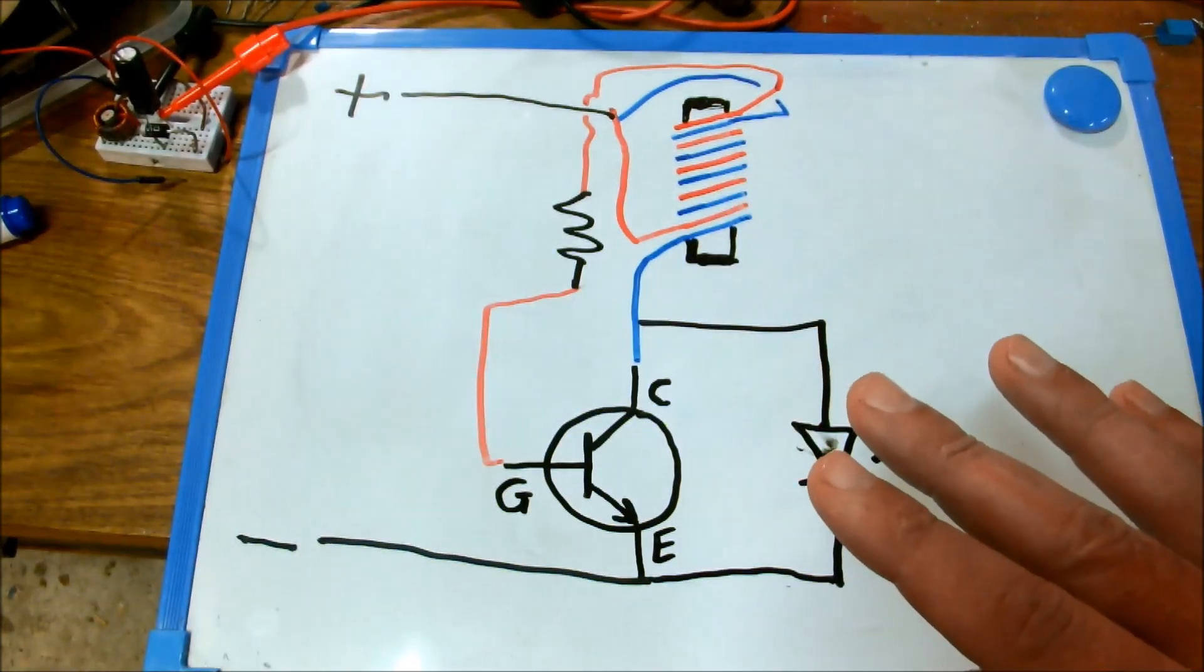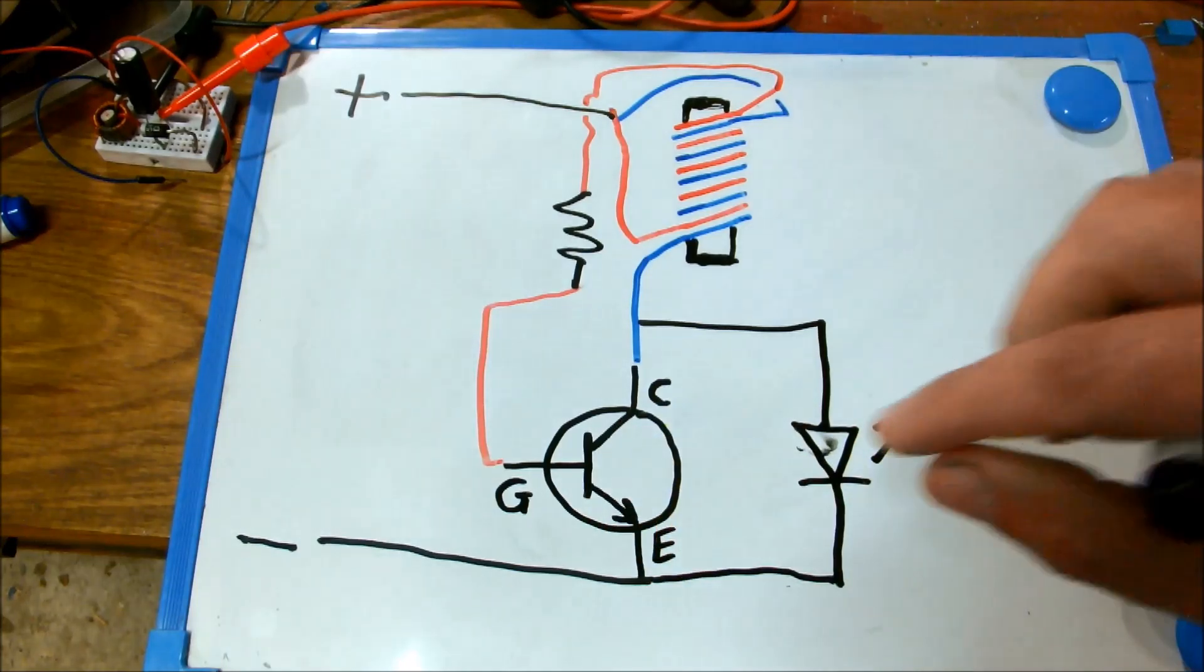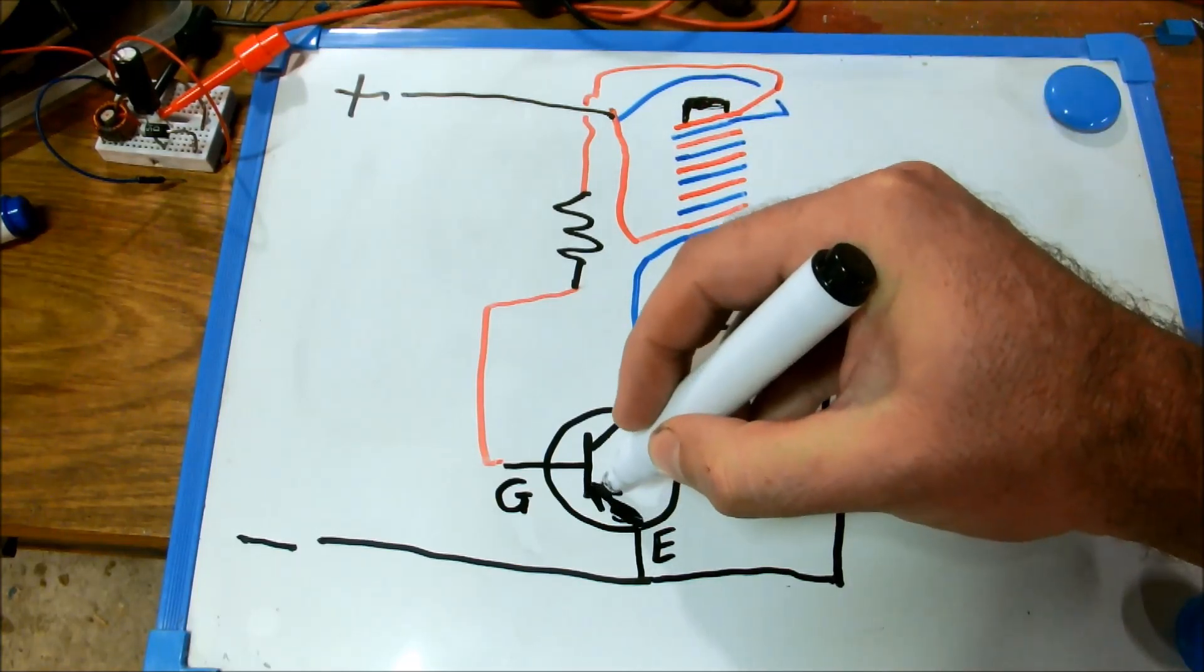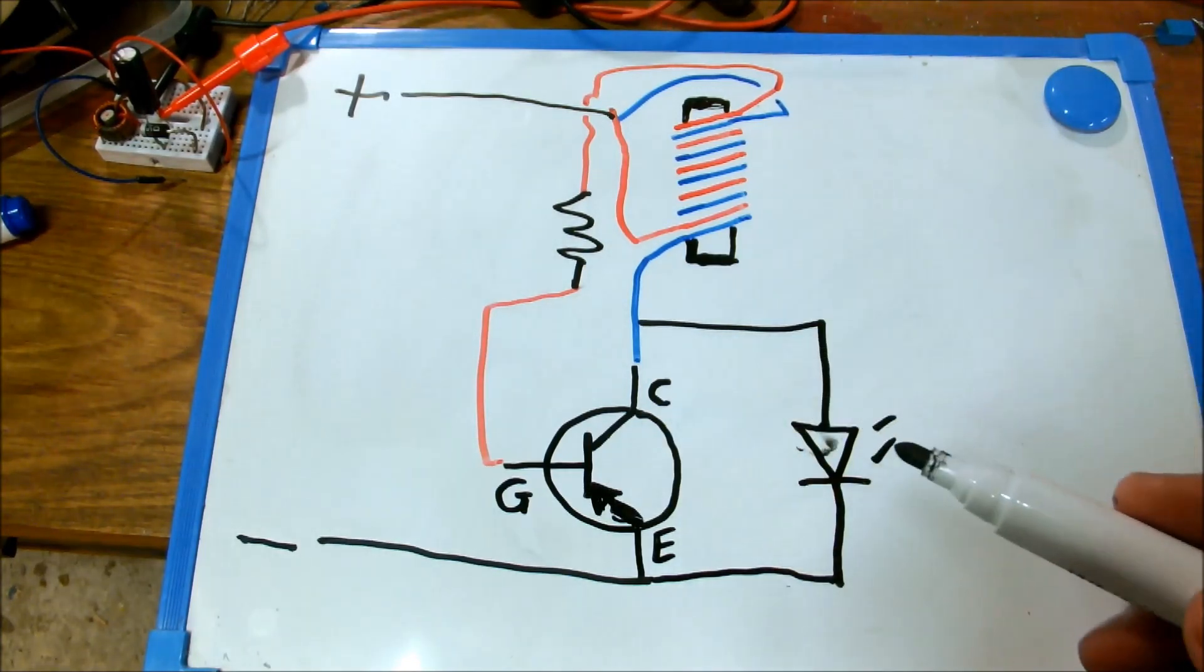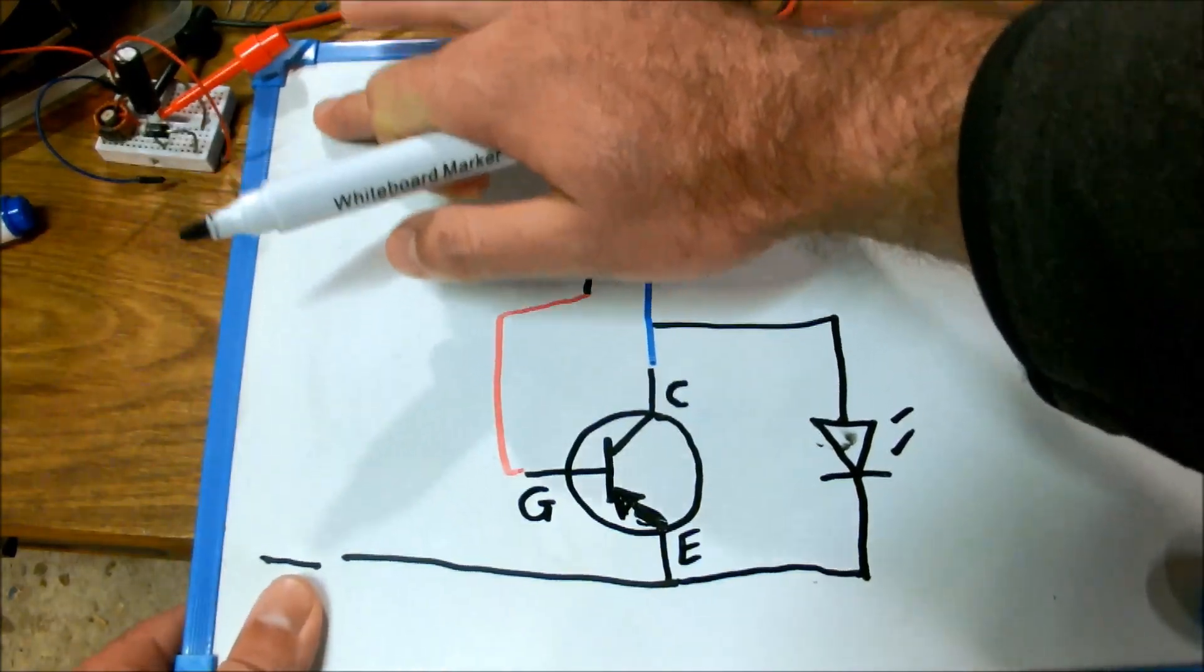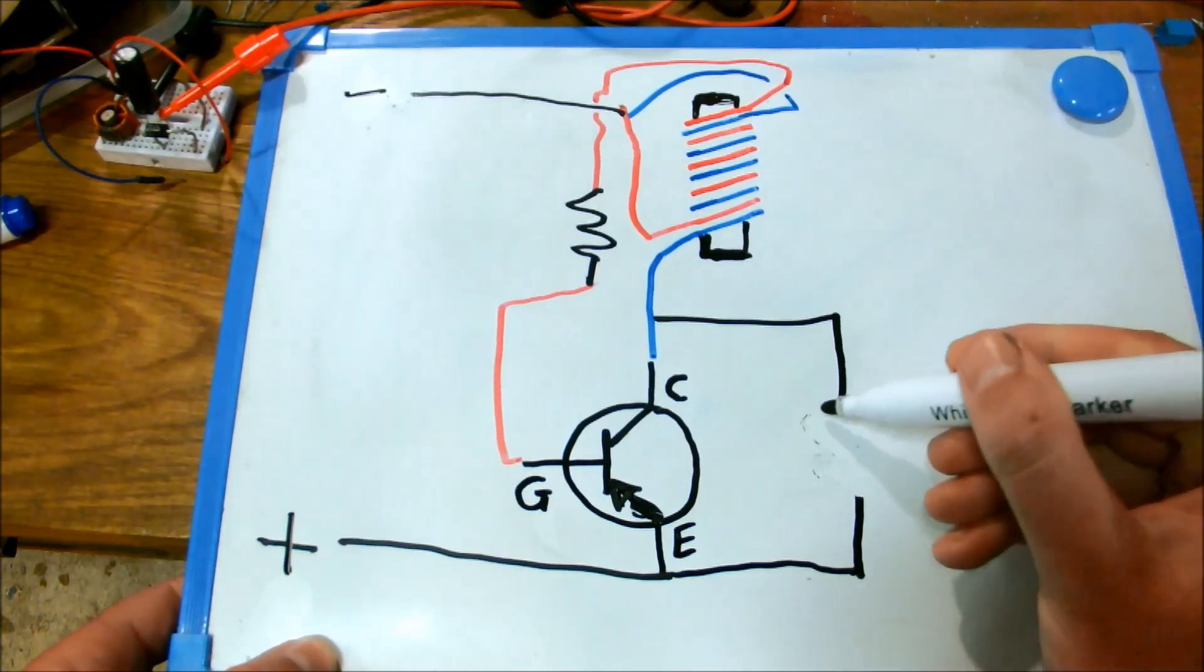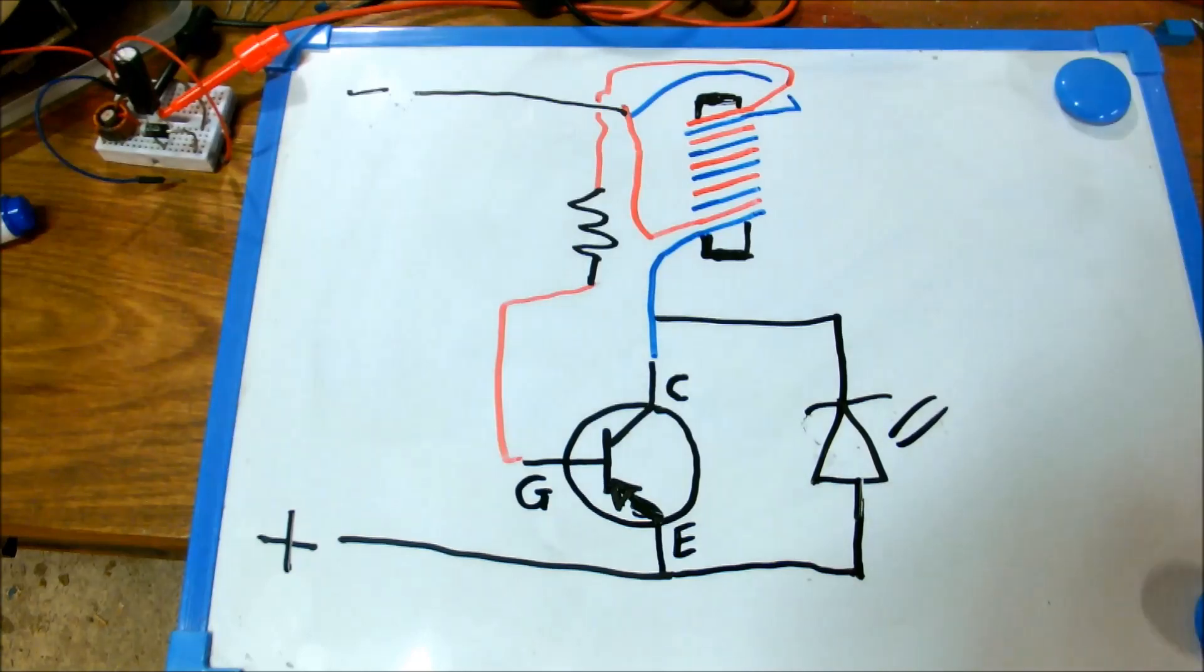If you want to change the circuit in order to work with a PNP type transistor, in other words one that looks like that, there's really just two things you need to change. Everything else can remain exactly as they are. You change the polarity and you change the direction, since an LED has a positive and a negative side.